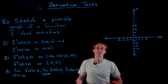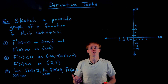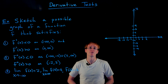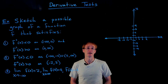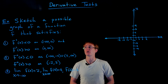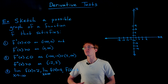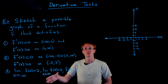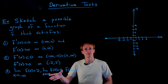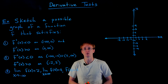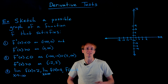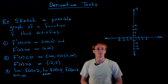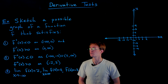In this example, we're going to put together what we've learned about the first and second derivative and what they tell us about the graph of a function to help us actually sketch the graph of a function. We want to sketch a possible graph of a function f that satisfies the following criteria. This isn't going to be the only possible function that satisfies these criteria, but they're all going to look roughly similar to the one we produce here.